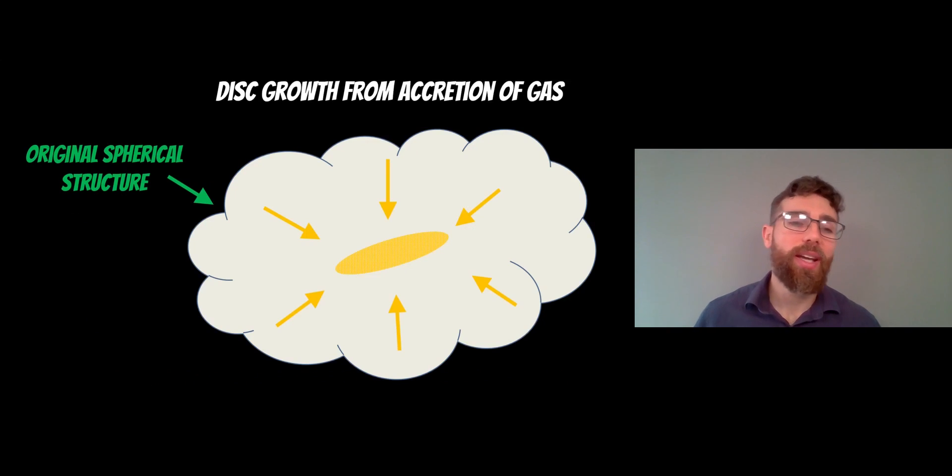And then the other one is that they could actually have grown their disk from accretion of gas. So you could have had this more spherical-like gas structure around, and it accreted from that to form a disk, and that's how we end up with a lenticular. So it was more of a larger structure that actually kind of accreted a disk-like structure from the gas that was more spherical to start with.